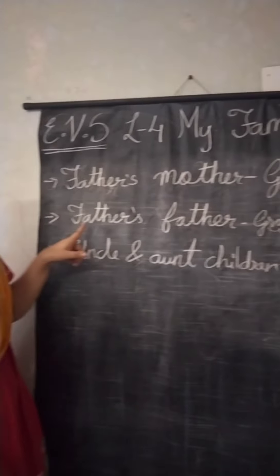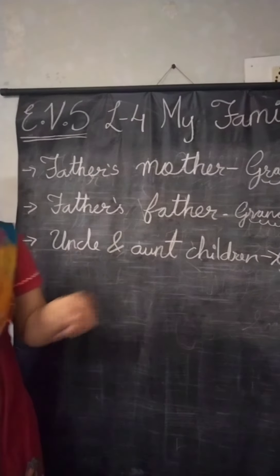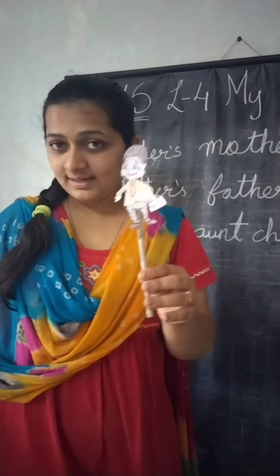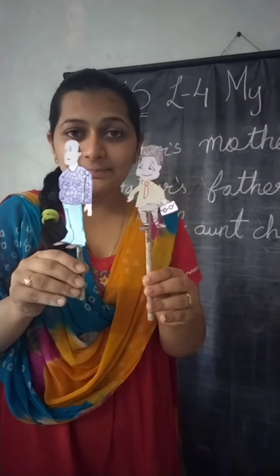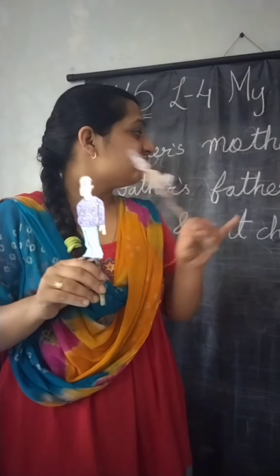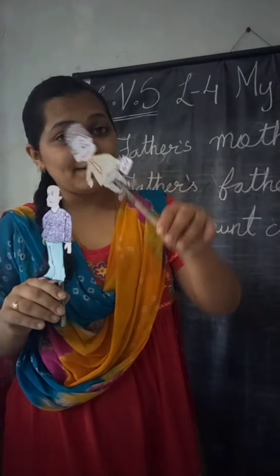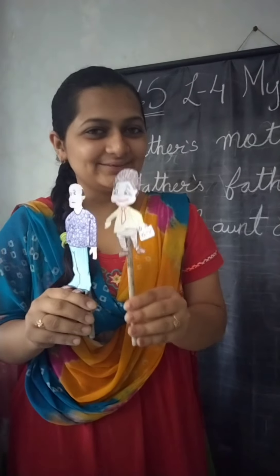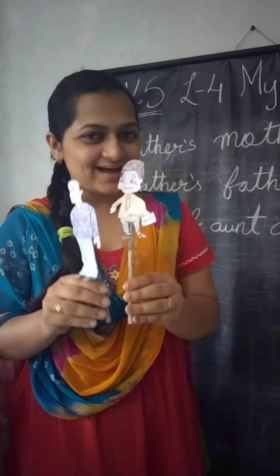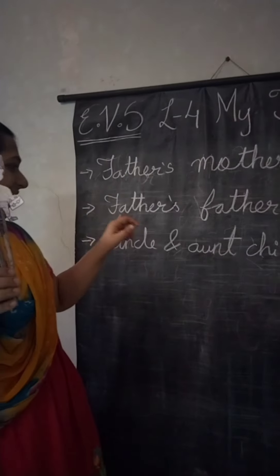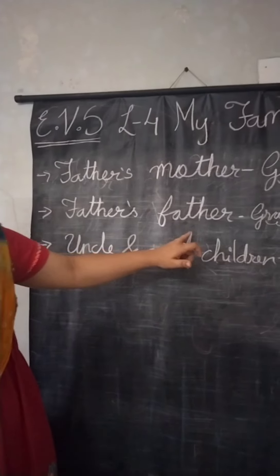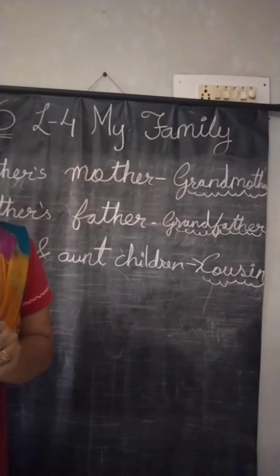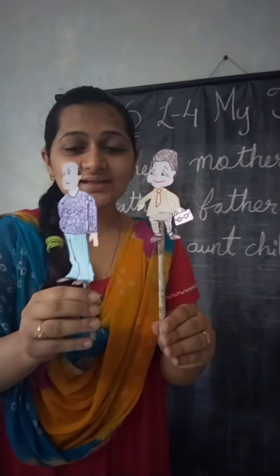Next is father's father. Yeh aapke papa aur yeh unke papa — father's father, matlab papa ke papa. Papa ke papa apke kya huye? Dadu aur dada, right? So father's father is known as grandfather. Toh yeh aapke kya huye? Grandfather.